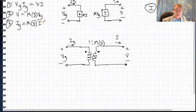We also know for transformers, the currents follow the same rules, but in the opposite direction. So here the input current IG flowing into the dot is equal to the current on the secondary flowing out of the dot multiplied by the turns ratio, so M(D) times I.